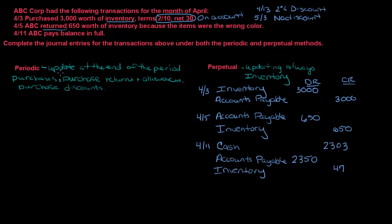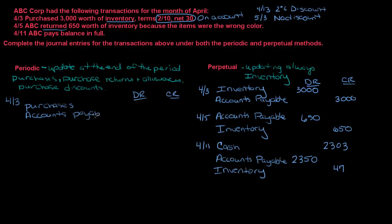Under the periodic method we use purchases, purchase returns and allowances, and purchase discounts. This method is a little more complicated but not too bad. On April 3rd, purchased $3,000 worth of inventory, terms 2/10 net 30. Instead of using inventory, I use purchases. So debit purchases $3,000 and credit accounts payable $3,000.